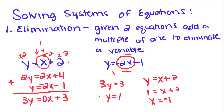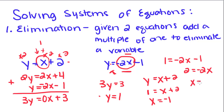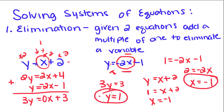If you plug y equals 1 into the second equation, you get 1 equals negative 2x minus 1. Add the 1 over to get 2 equals negative 2x. Divide by negative 2 and you get x equals negative 1. So either way, you get x equals negative 1 and y equals 1. We always write this final solution as an ordered pair.